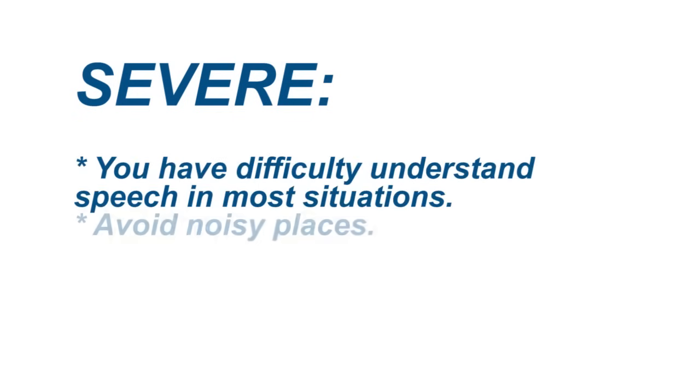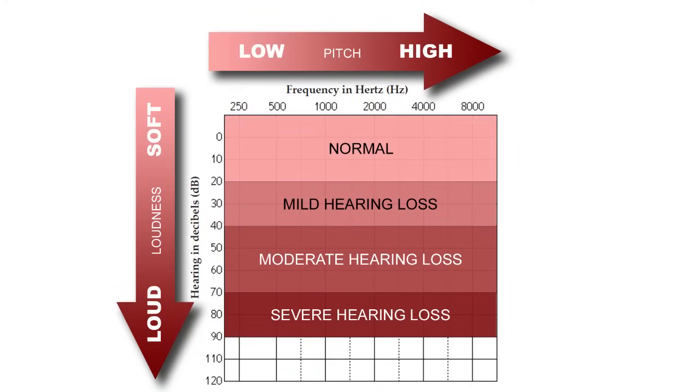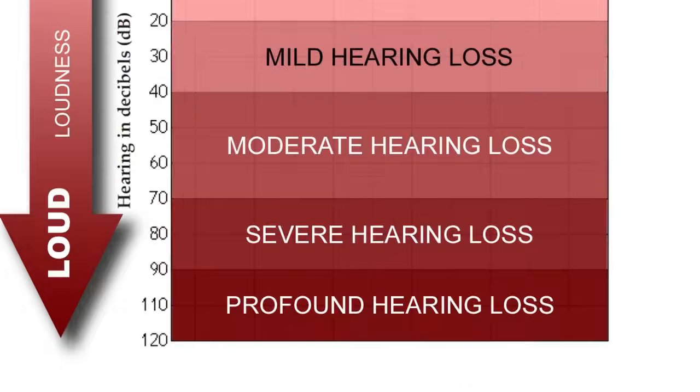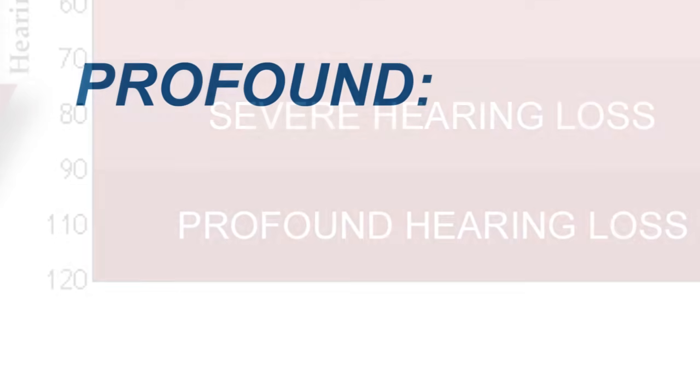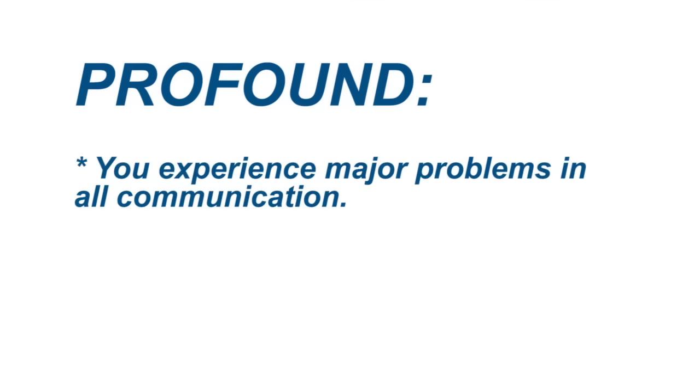And if your hearing loss is profound, you will see the mark in the 90 to 120 decibel range. At this level you are having major communication problems in all situations. Profound hearing loss typically requires visual assistance while communicating, such as lip reading or sign language.